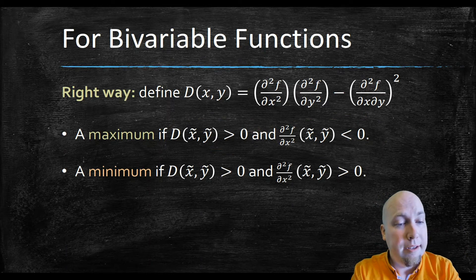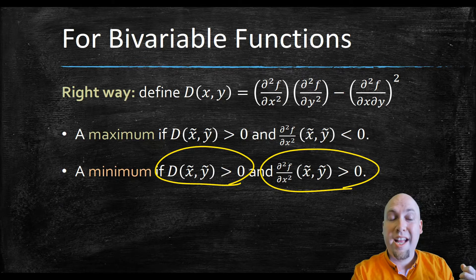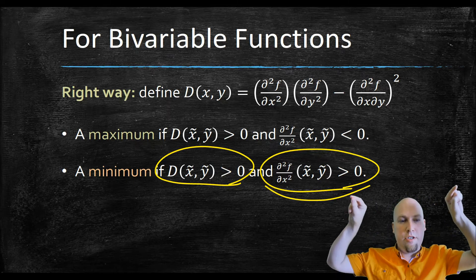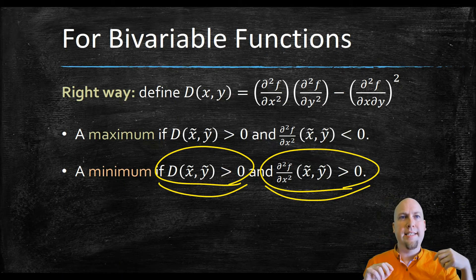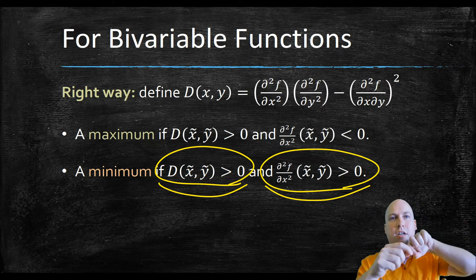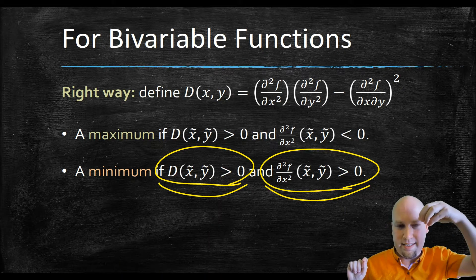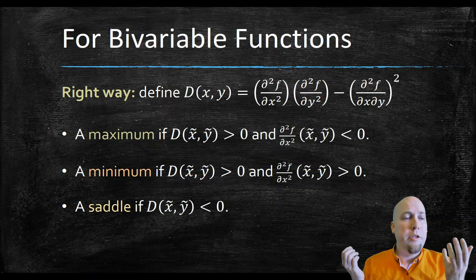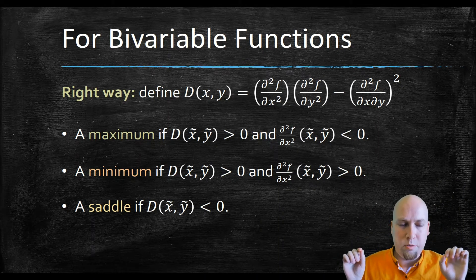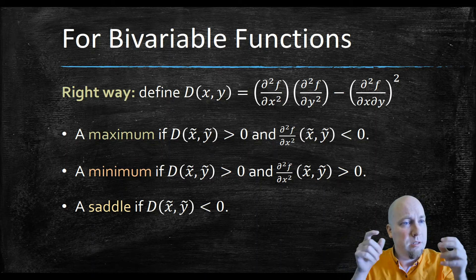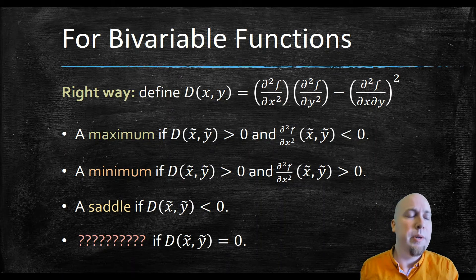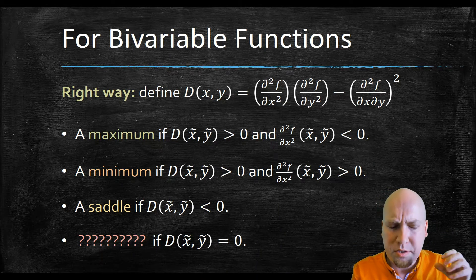If D is positive and the double x partial derivative is also positive, it's a minimum — concave up in the x direction, and since D is positive, concave up in every direction, so it's just at the bottom of a valley. If D is negative, concavity is not uniform — it's concave up in some directions and concave down in others, so that's a saddle point. And unfortunately, if D equals zero, we just don't know; there are cases where it's a maximum, minimum, or saddle point, so you have to be more clever.